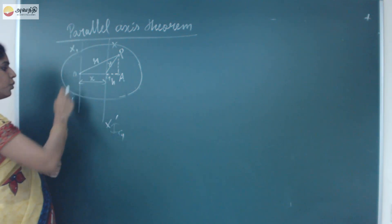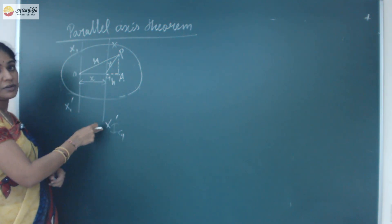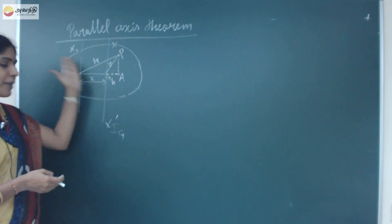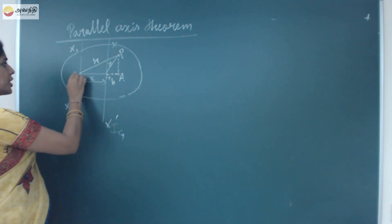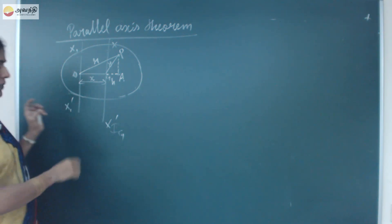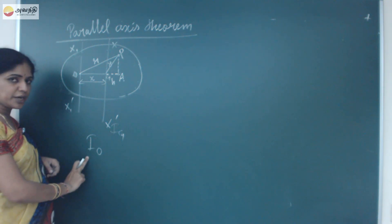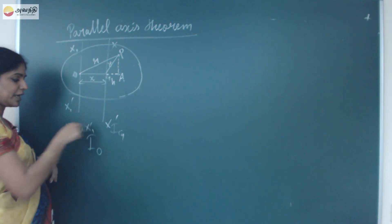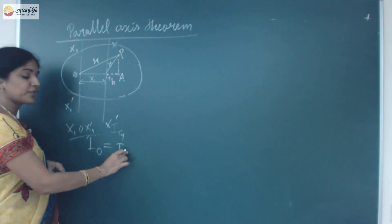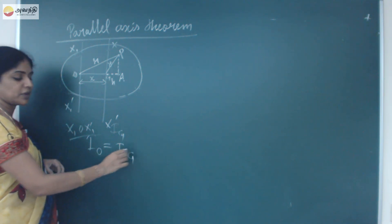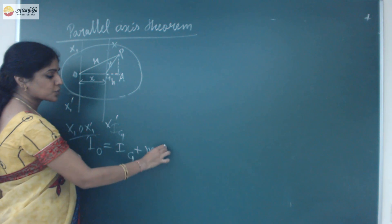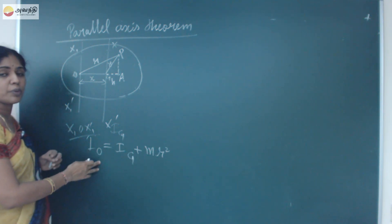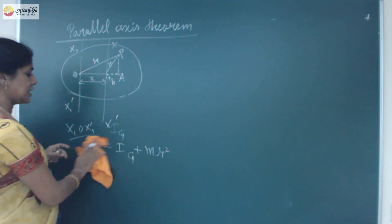I have another axis X₁OX₁' which is at a distance X from the first axis. Both axes are parallel to each other. The moment of inertia about this new parallel axis is called I₀. The parallel axis theorem states that I₀ equals the sum of the moment of inertia about the axis passing through the center of gravity (Ig) plus the product of the mass and the square of the distance between the two axes.